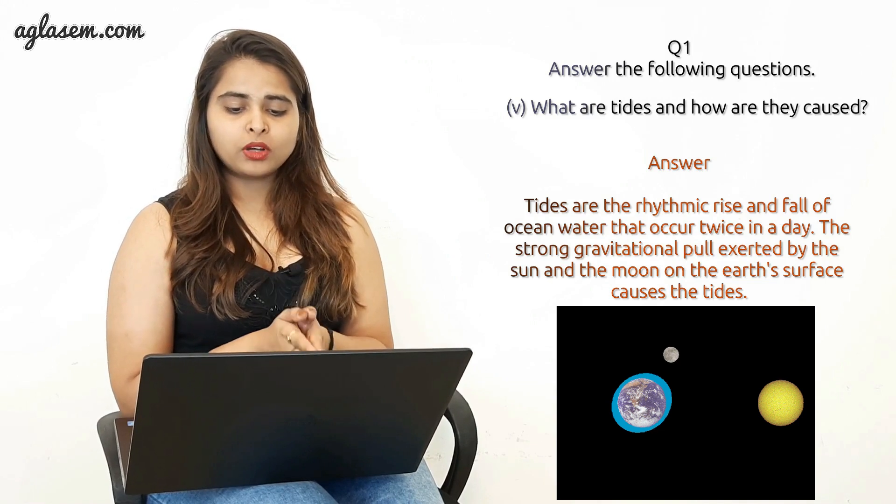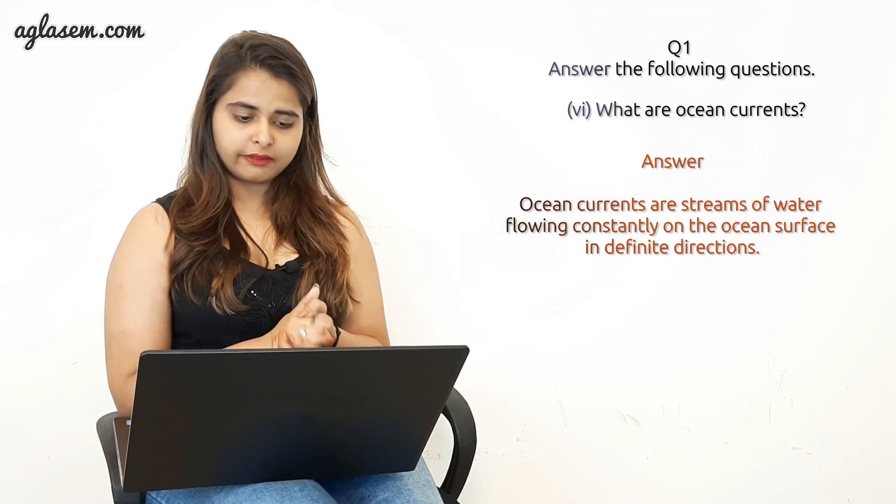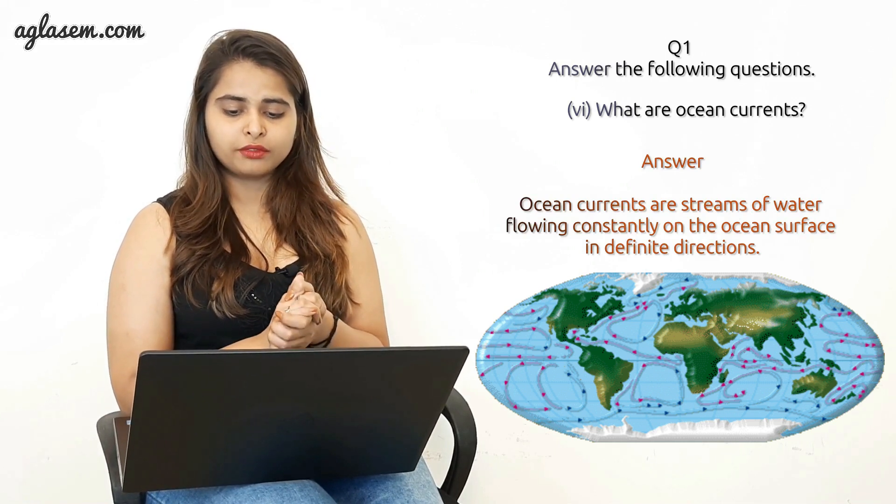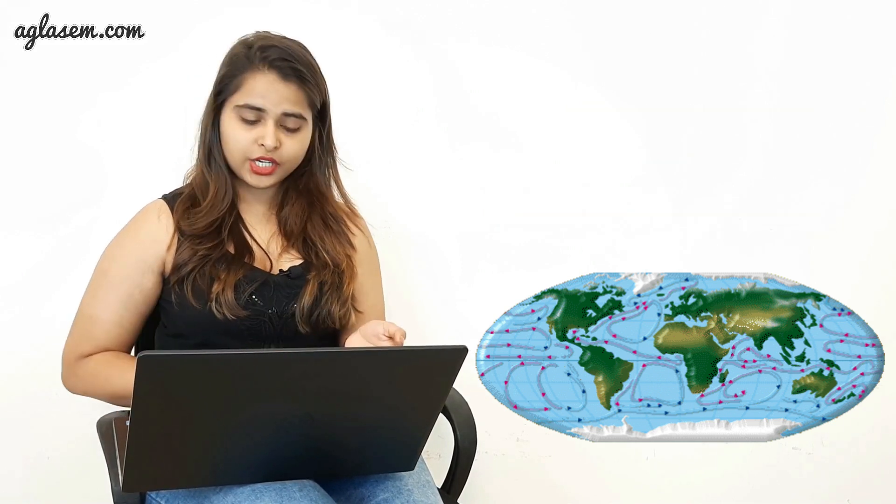The next question is what are ocean currents? Answer: Ocean currents are streams of water flowing constantly on the ocean surface in definite directions.